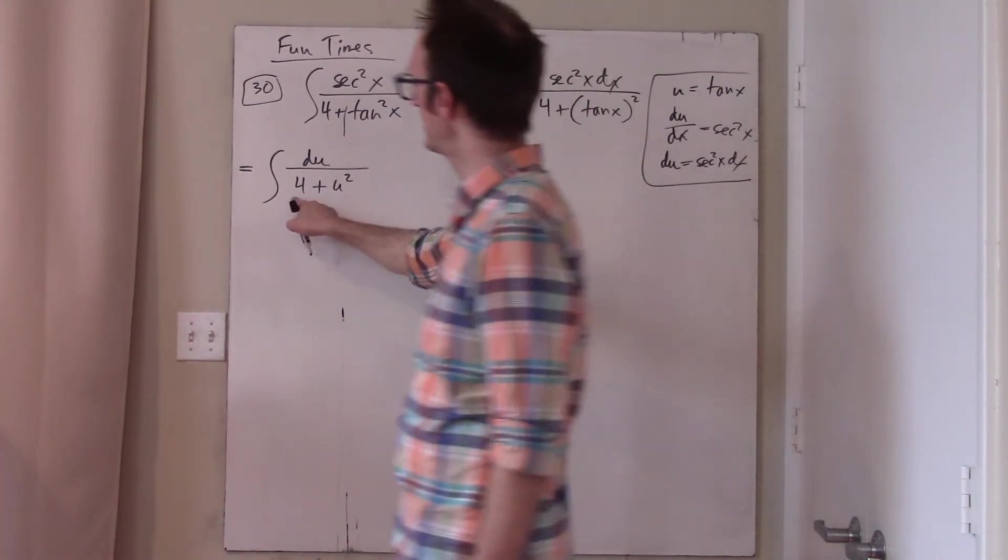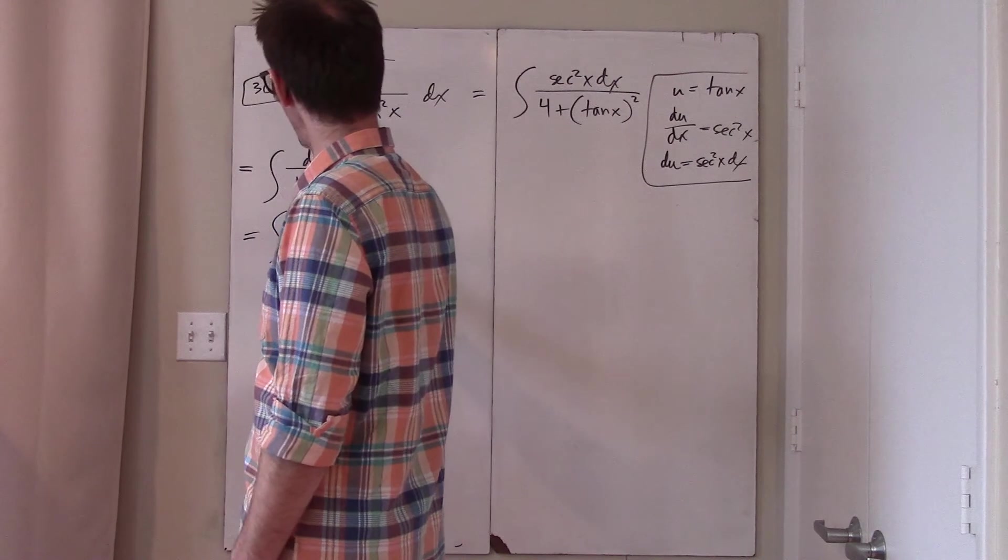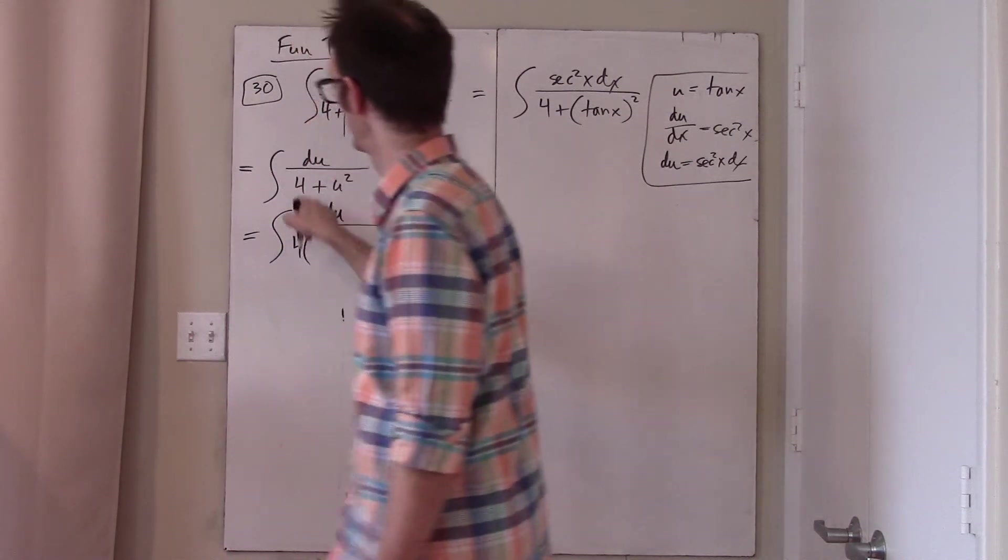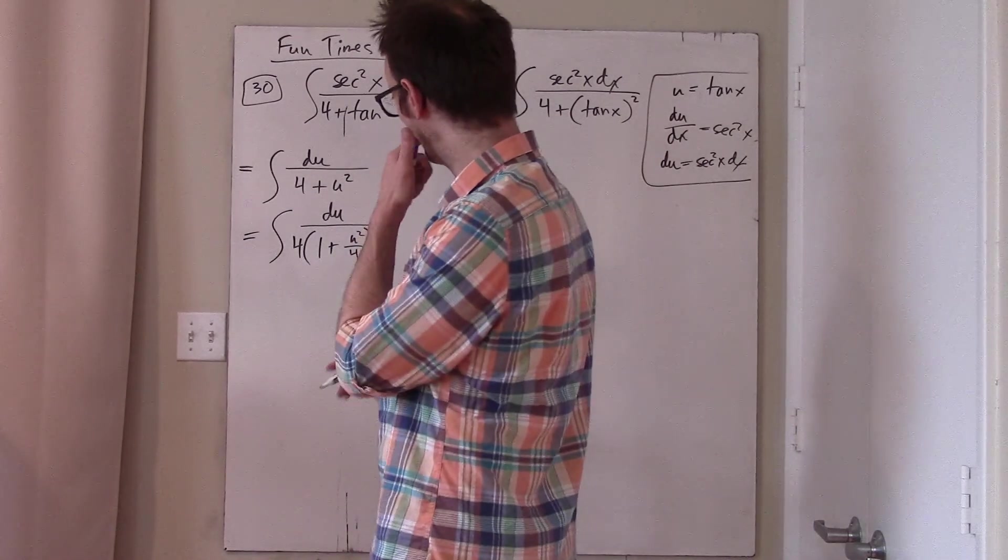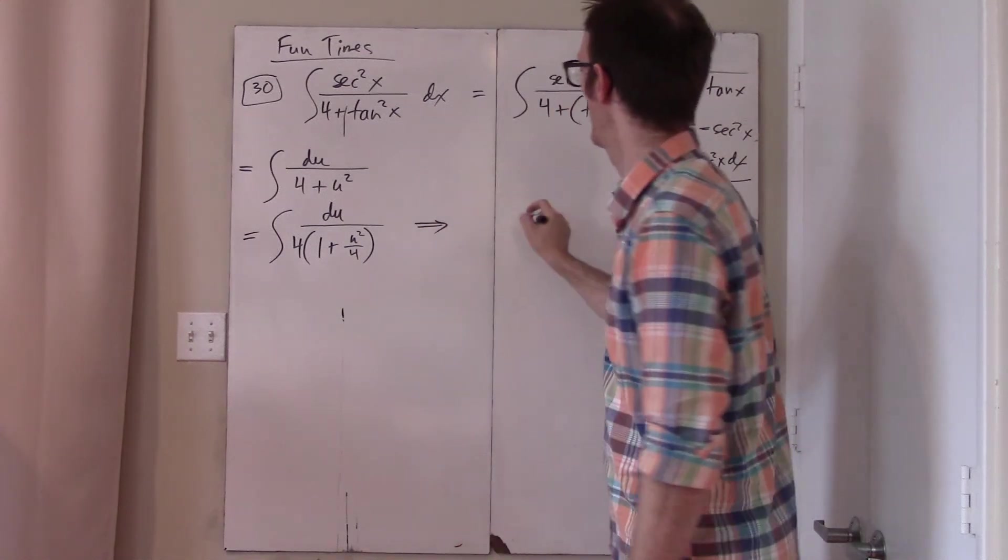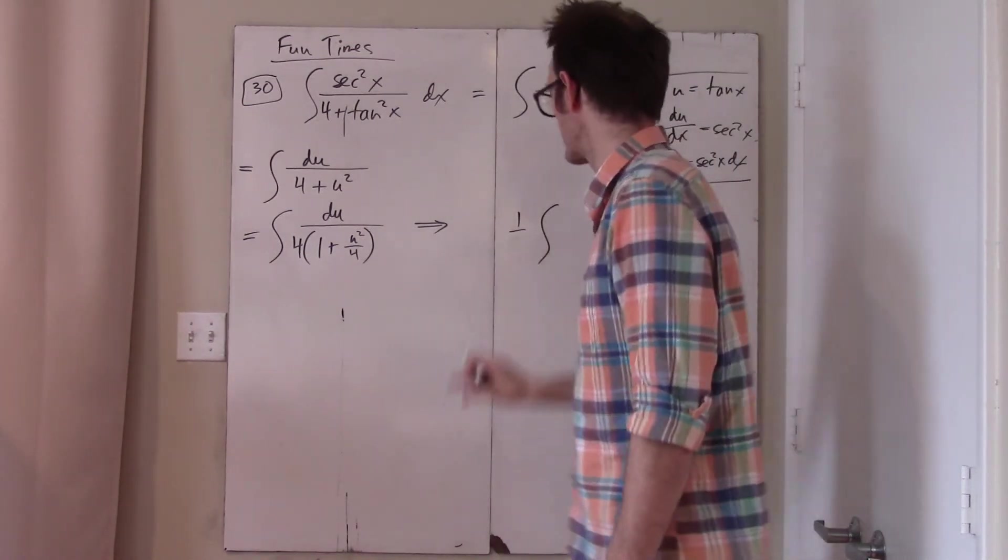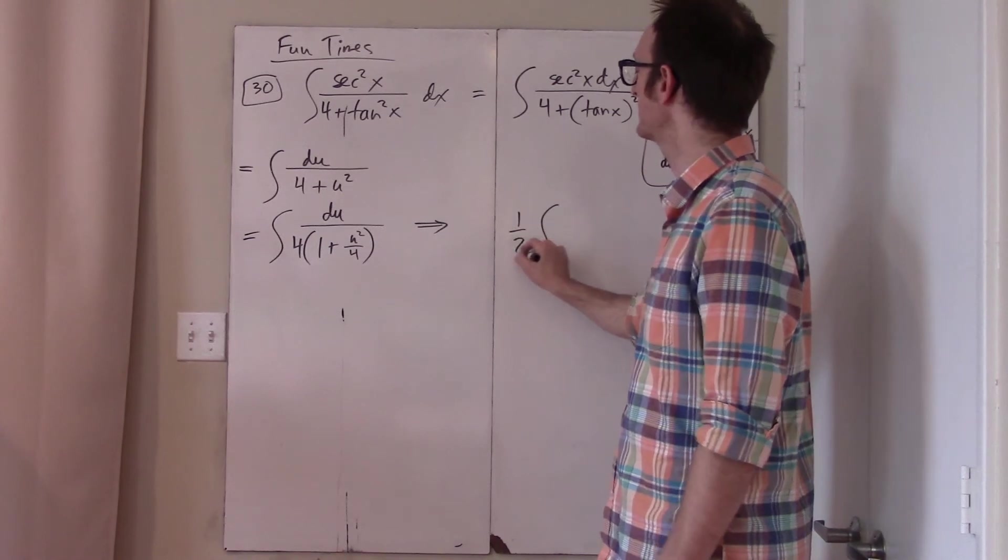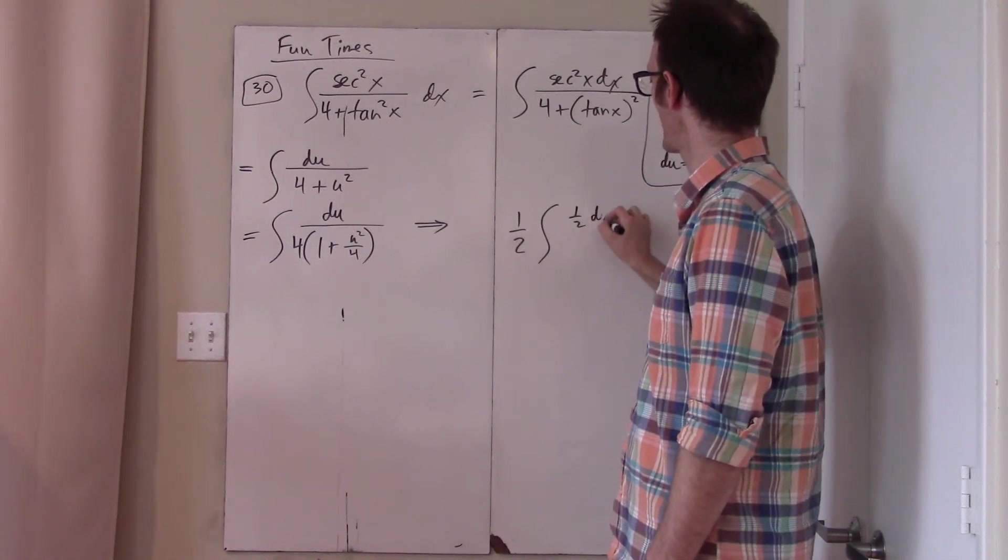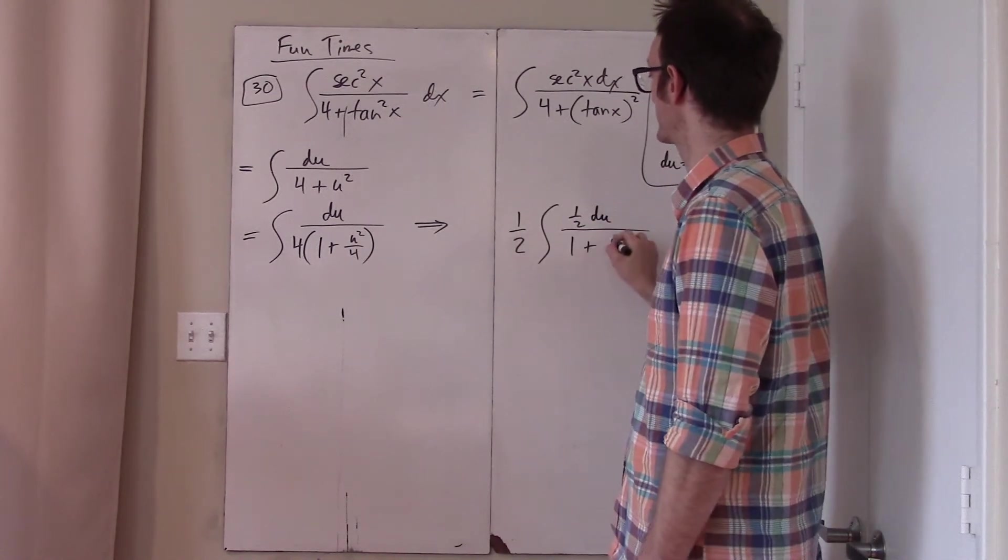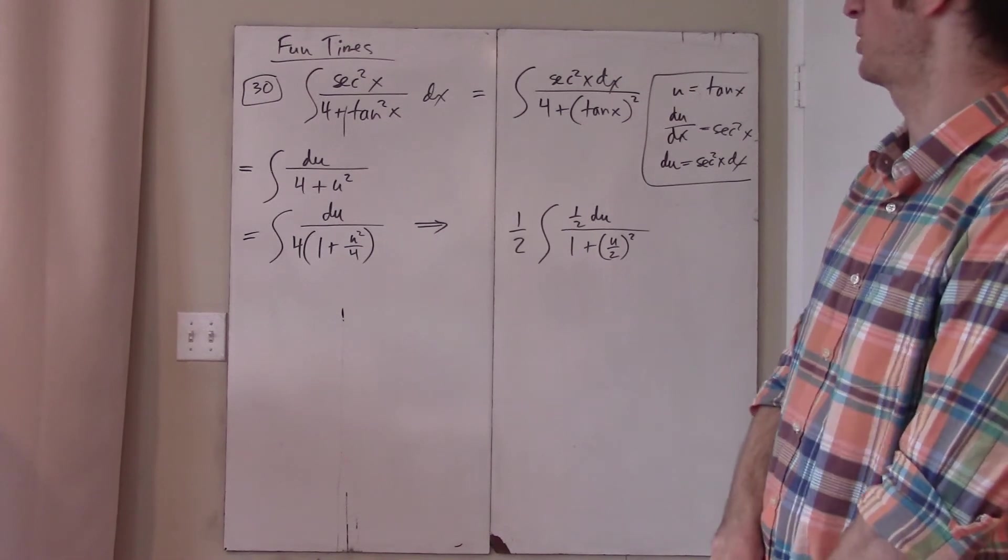But there's this 4 here, so to deal with the 4, I factor out a 4 in the denominator, leaving me with 1 plus u squared over 4. And then maybe this time I'll do something slightly craftier, which is by thinking ahead I'll only take half. I'll split that 1 fourth up into 1 half, and up here I'll put 1 half du, and down here I'll put 1 plus u over 2 squared. Confirm that algebraically is all correct.